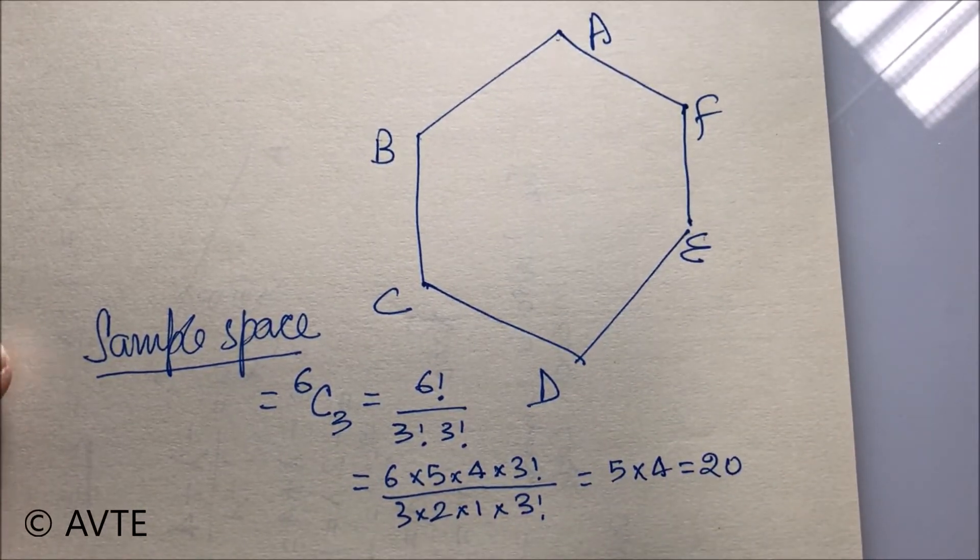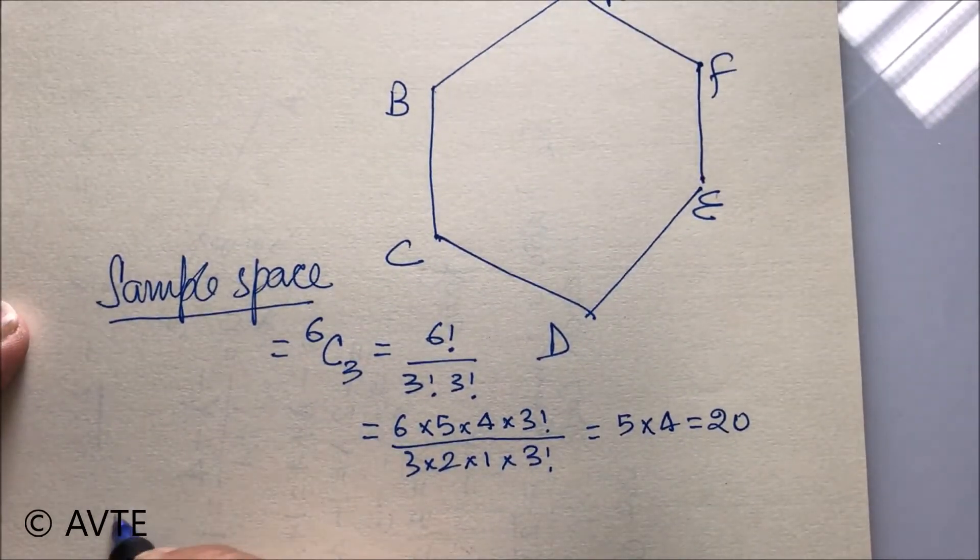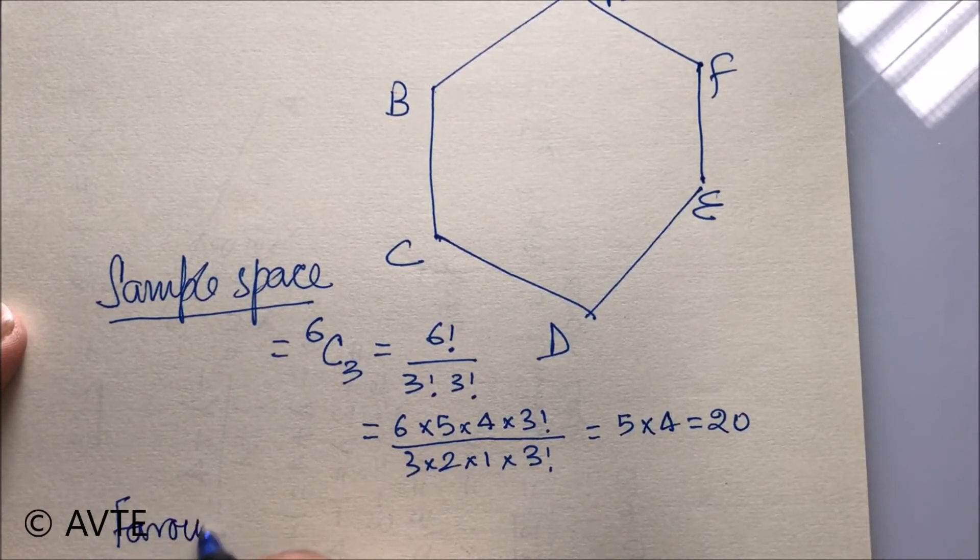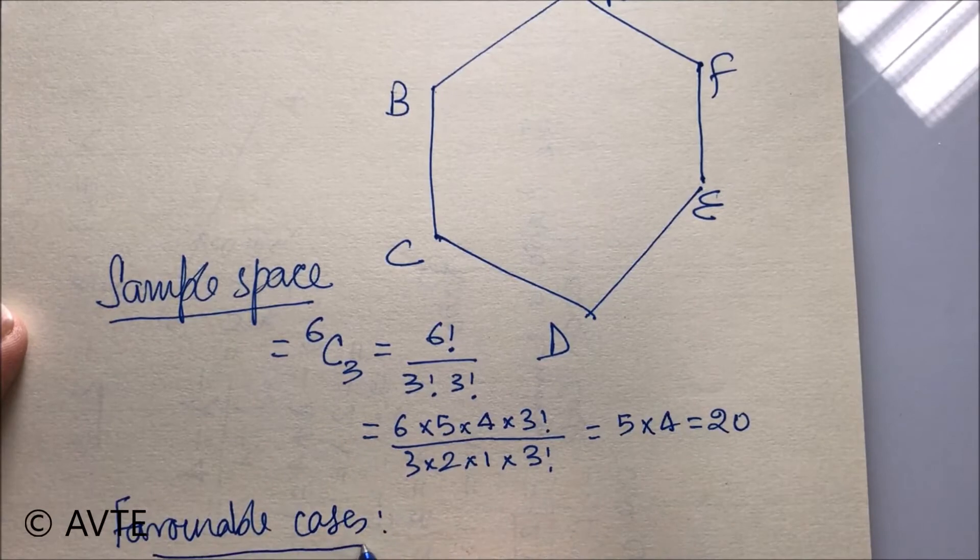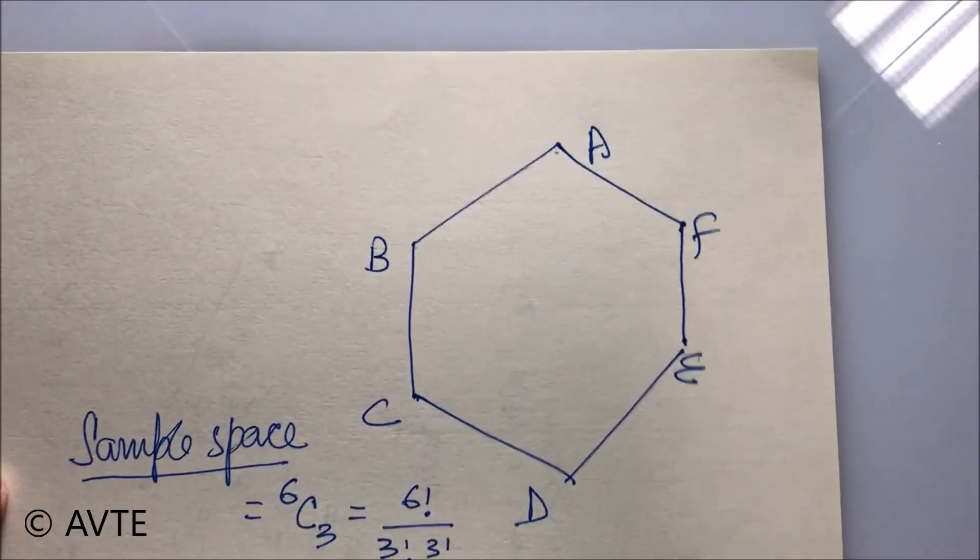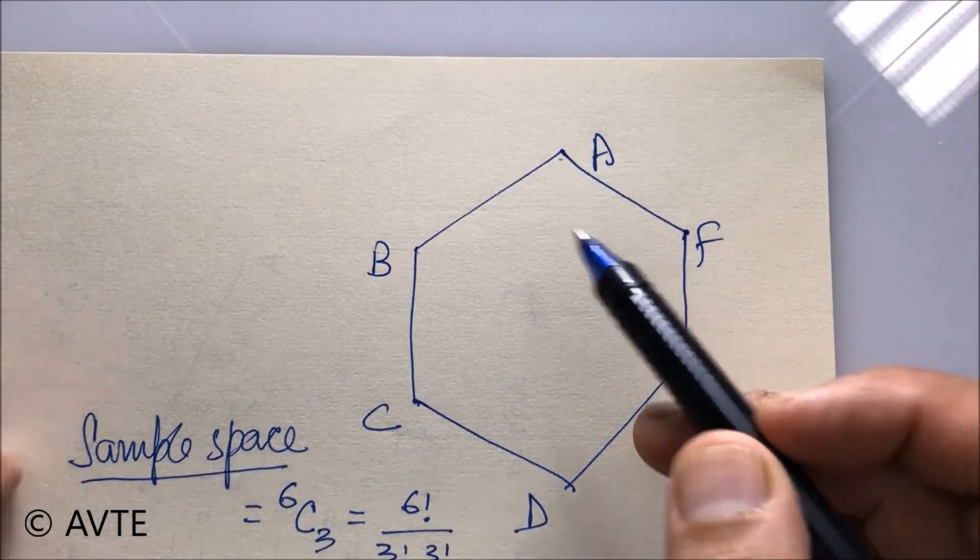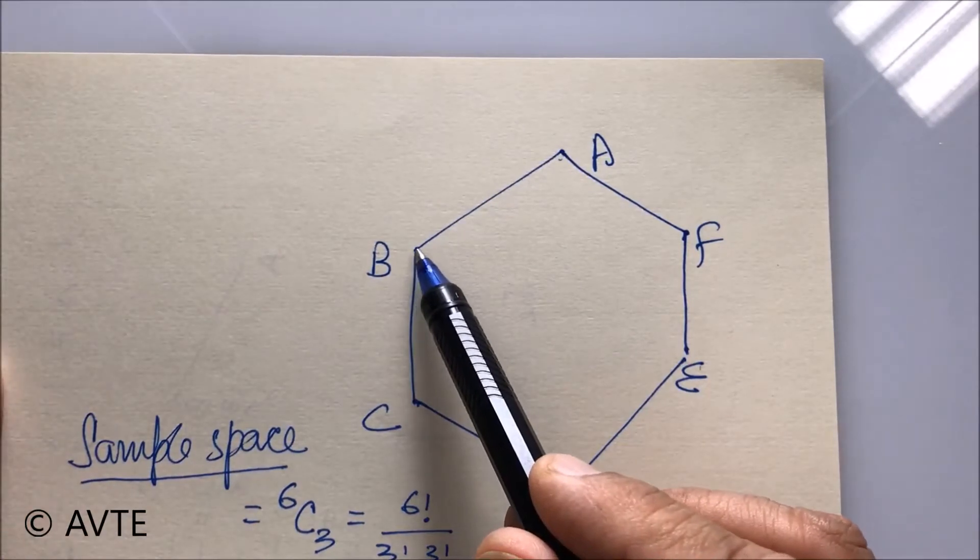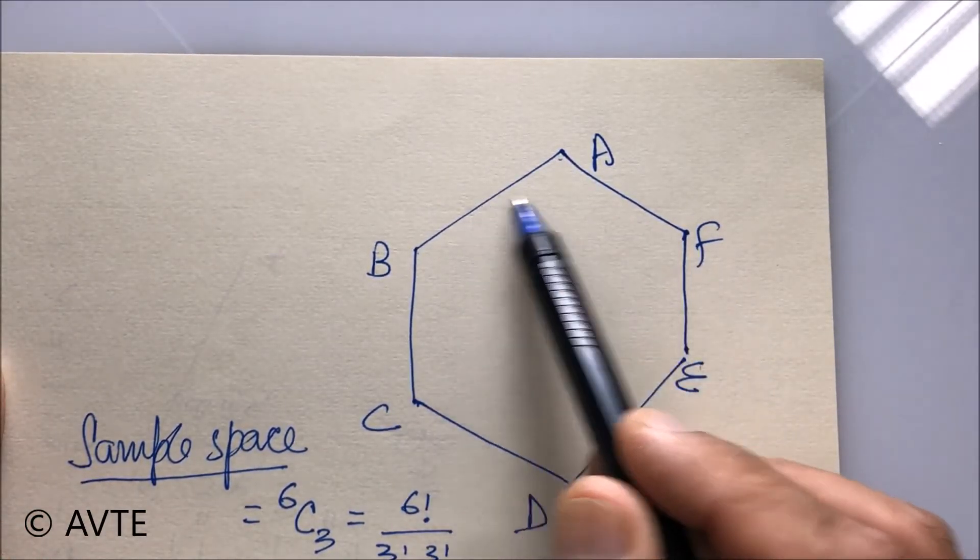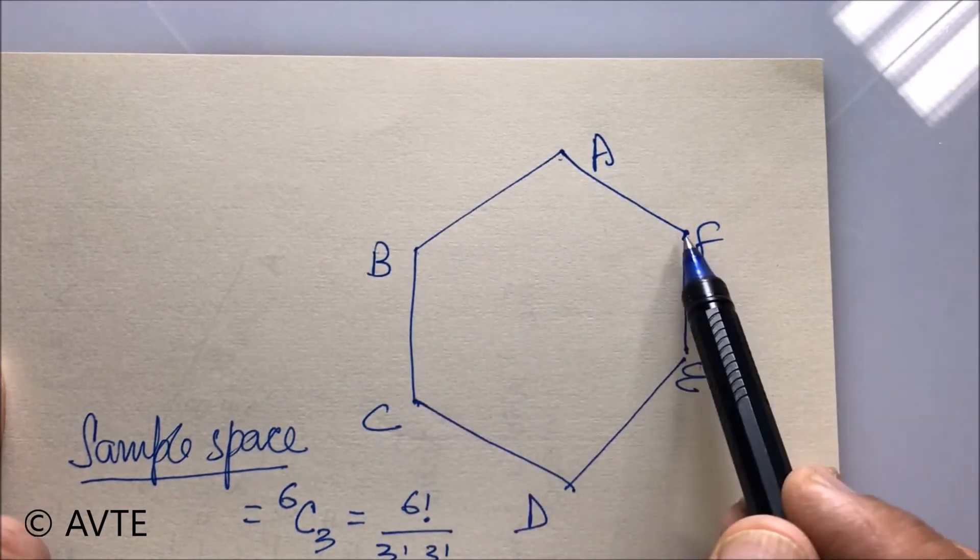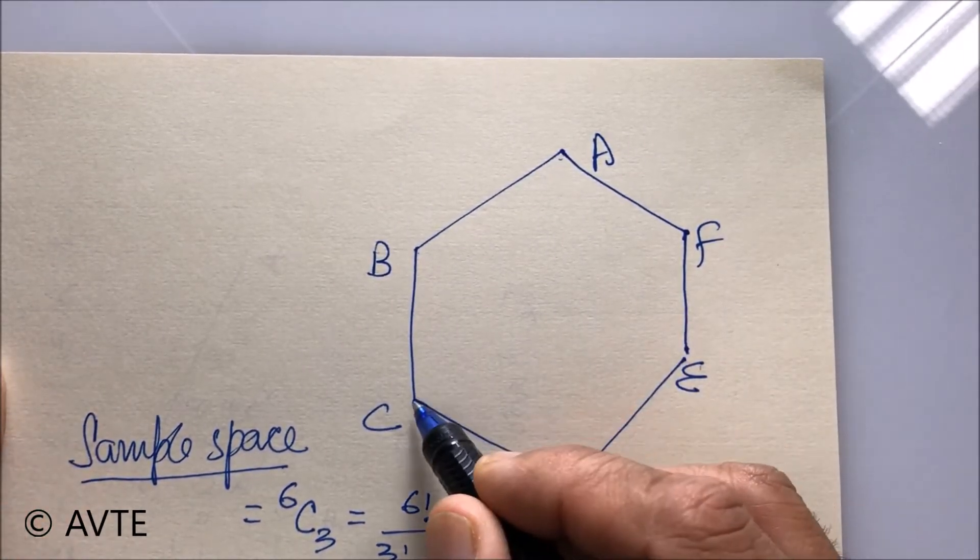But when it comes to favorable cases, we have to do it manually. Just see, if I join B with F, it will be isosceles triangle because these two sides are equal, but this side will not be equal. And just see carefully what I am doing.